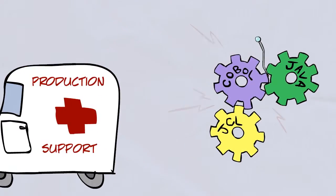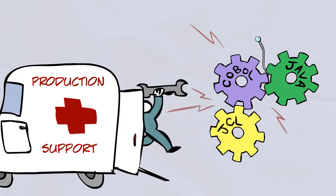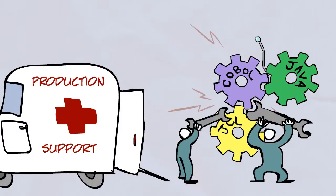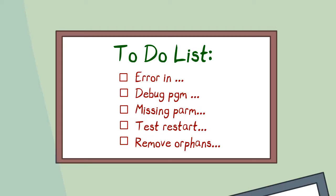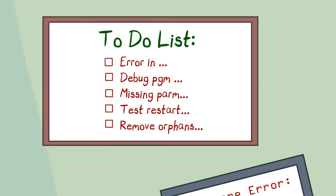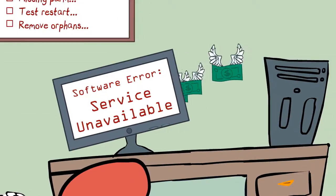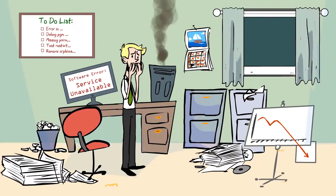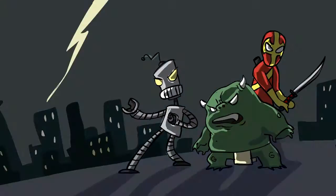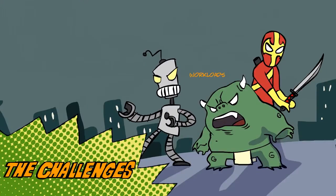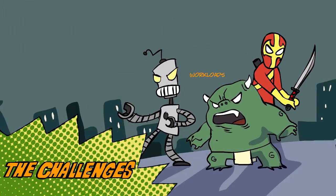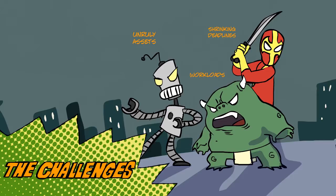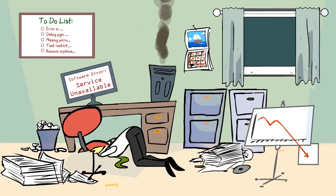Add a few production issues like system failures and downtime, and before you know it, your IT group's behind schedule, over budget, and facing a global quagmire. How can you conquer the challenges of insurmountable workloads, unruly assets, shrinking deadlines, and save the company time and money?